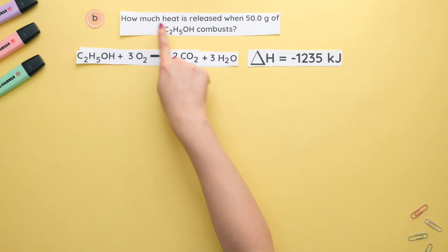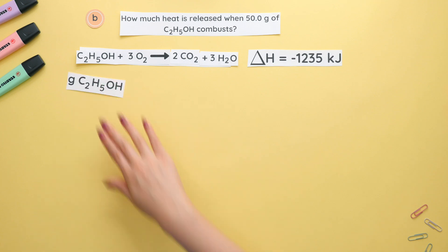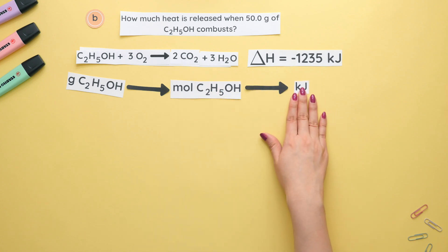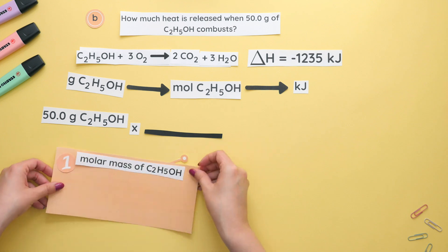Part B asks how much heat is released when 50 grams of ethanol combust. So since we are going from grams of ethanol to heat, our plan will be to go from grams of ethanol to moles of ethanol using the molar mass of ethanol and then use the enthalpy change given to get to kilojoules. We'll start with our given of 50 grams of ethanol. Now let's find the molar mass of ethanol.